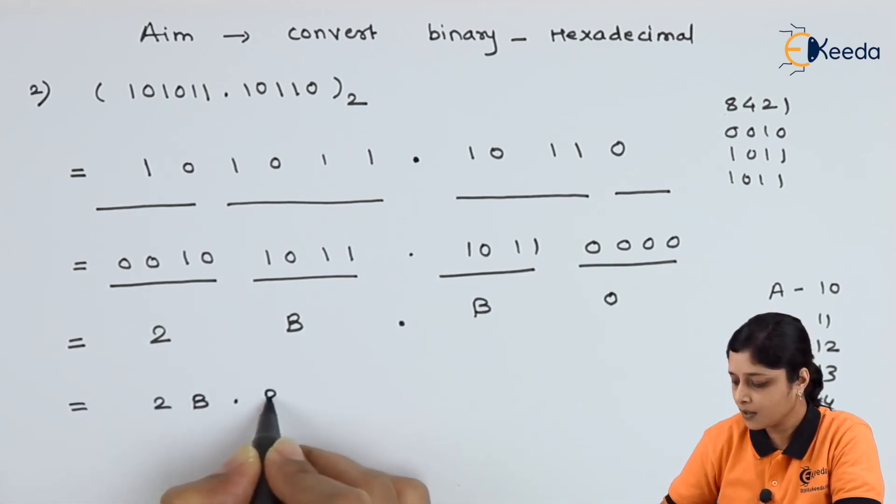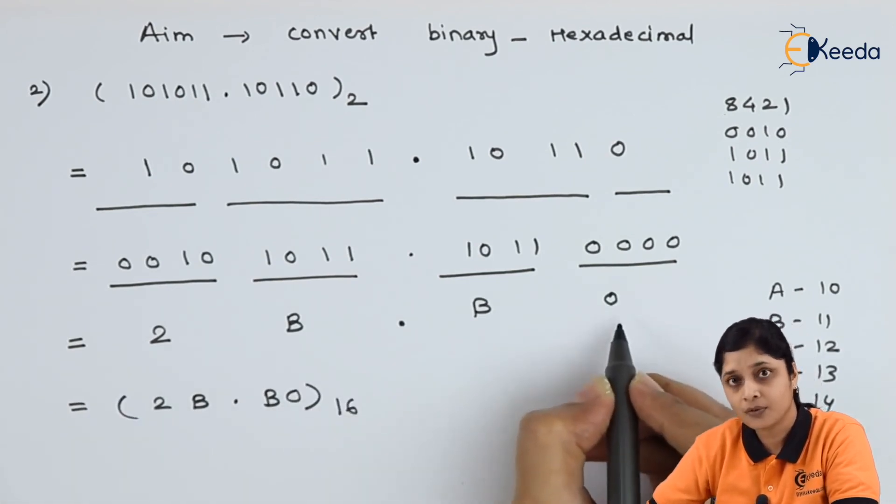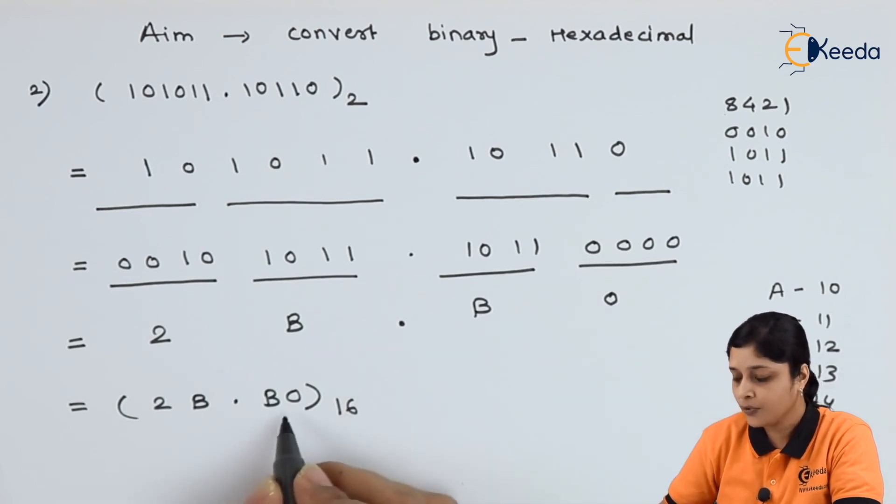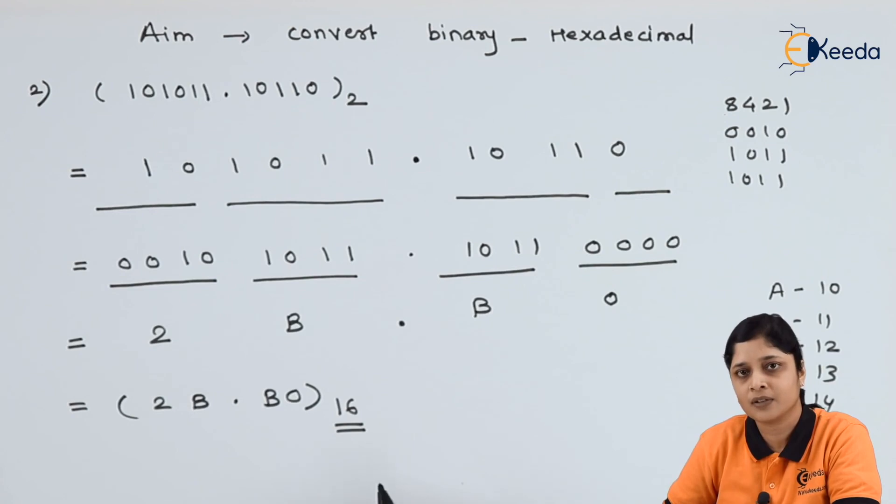2 B decimal point B 0 to the base 16. Don't forget to write 0. You have to compulsory write all these things to the base 16. Base 16 is also important. It shows the number system in which you have converted binary number to hexadecimal number.